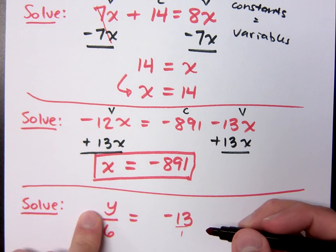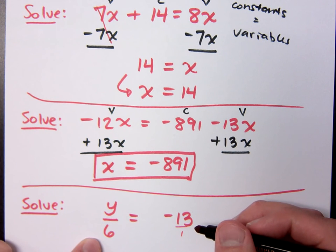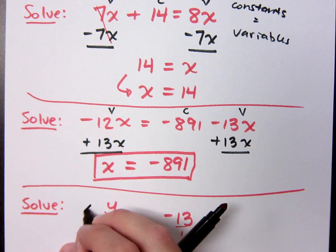Right. So what's being done to the y? The y. I'm dividing it by 6. And what's the inverse of dividing by 6? Multiply. Multiply by 6. So if I take this guy and I multiply times 6.